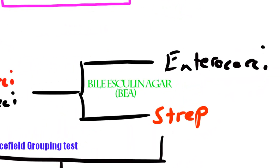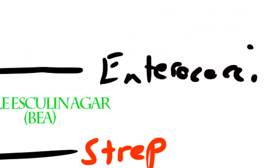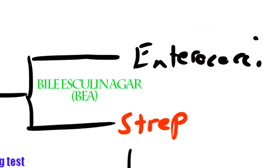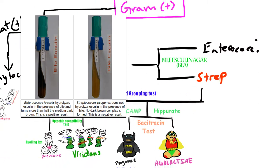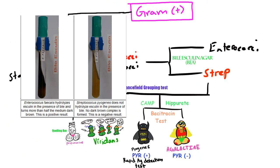We can then use bile esculin agar, aka BEA, which differentiates streptococci from enterococci. Streptococci can actually grow in bile but can't break down the sugar, so you won't see that charcoal-type black color. So it is BEA negative.